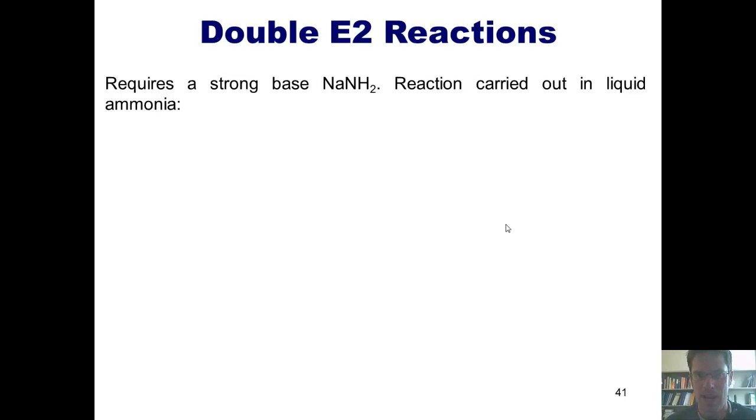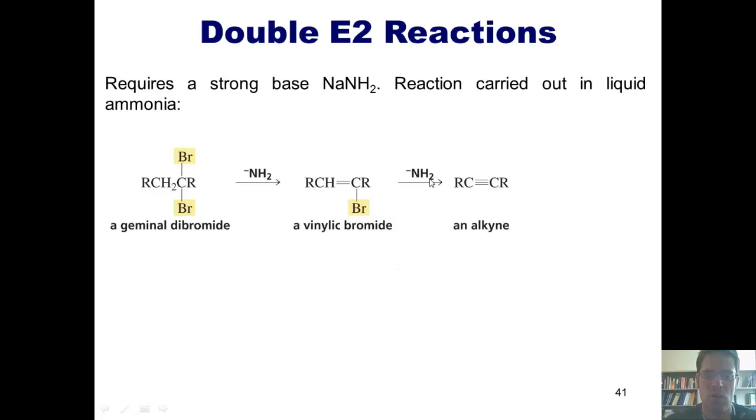There's another type of elimination reaction that I like to call the double E2 reaction, although I'm not sure our book actually gives it that name. Here's what we can do. If we've got a molecule like this, where I've got two leaving groups stuck on a carbon, I can do an elimination twice. It requires a strong base such as NaNH2, which is also called sodamide. What occurs is a molecule of NH2- strips the proton here at the carbon next door, pumps the electrons down, and kicks off the bromide to give me this intermediate. A second molecule of NH2- can then do the same thing again to give me an alkyne. So I can do a double E2 reaction to take a starting material that has two leaving groups, such as a gemdibromide shown here, and do two tandem elimination reactions to get an alkyne.